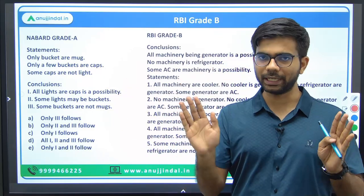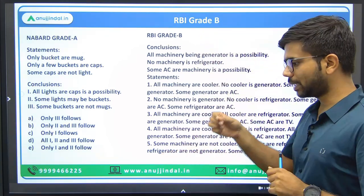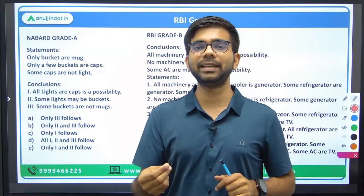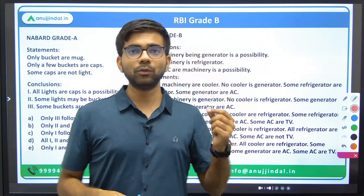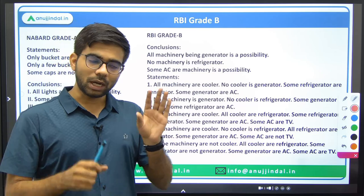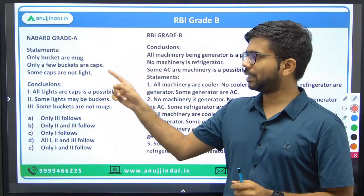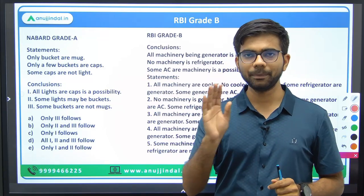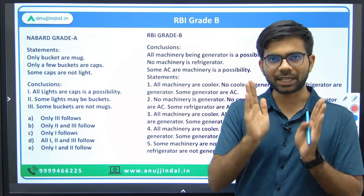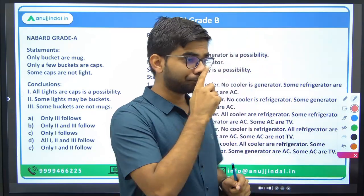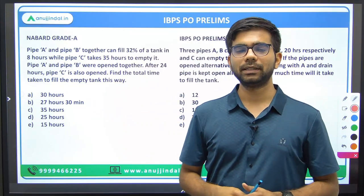So both Quant and Reasoning of NABARD are quite easy as compared to RBI — the RBI level is not present at all. One thing becomes clear: many aspirants cannot clear RBI exam or don't even attempt it because Quant and Reasoning are weak areas. So if your Quant and Reasoning are weak, you can work on them and definitely crack the NABARD exam, because here Quant and Reasoning are only qualifying in nature — you just need to clear the sectional cutoff.